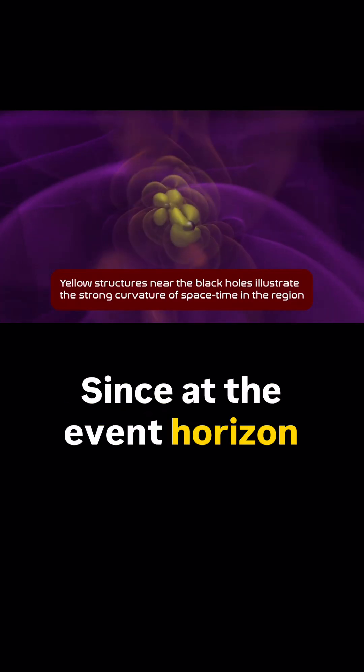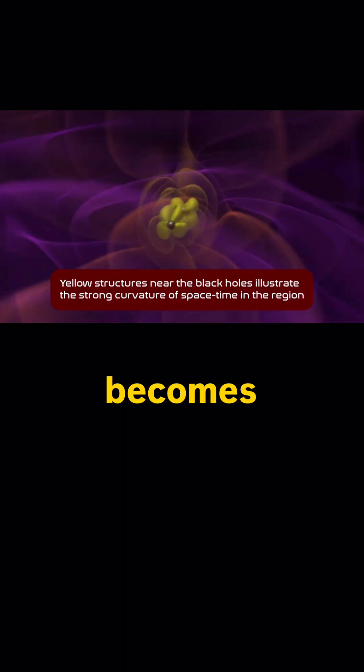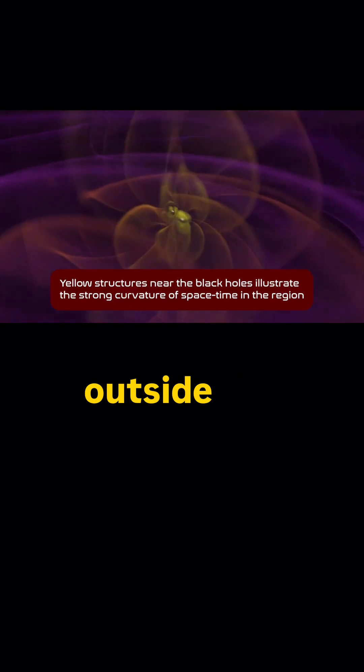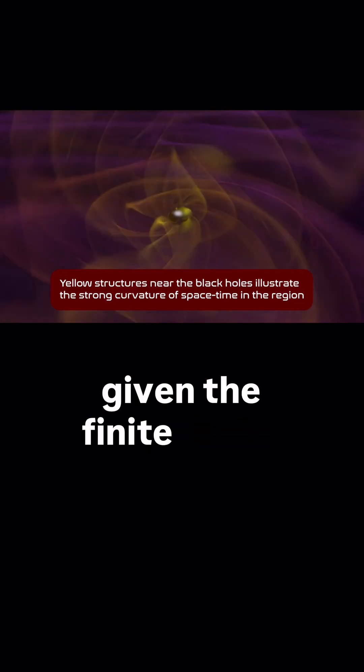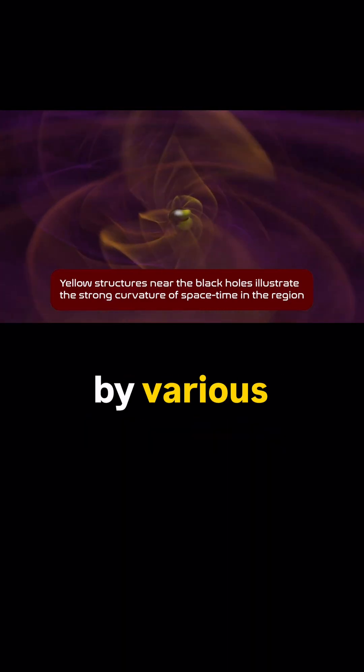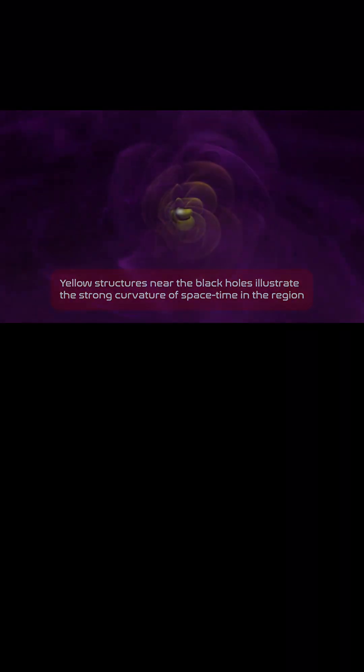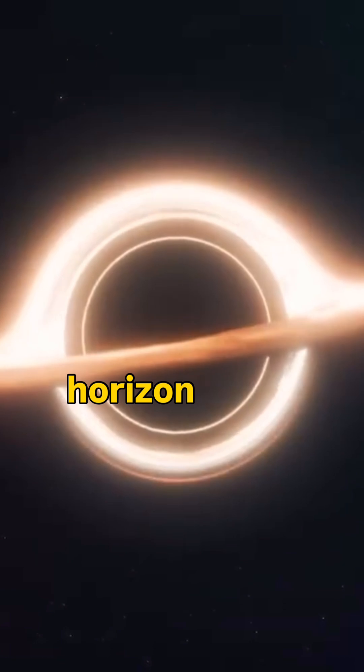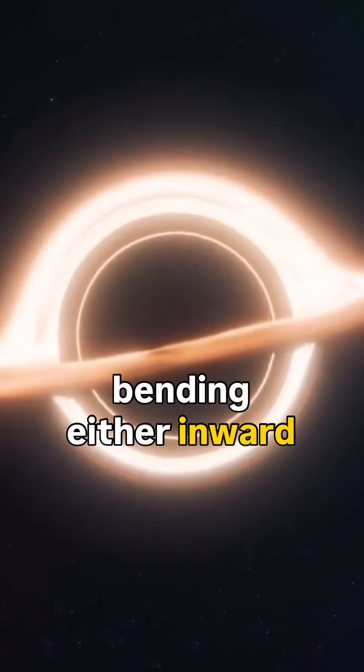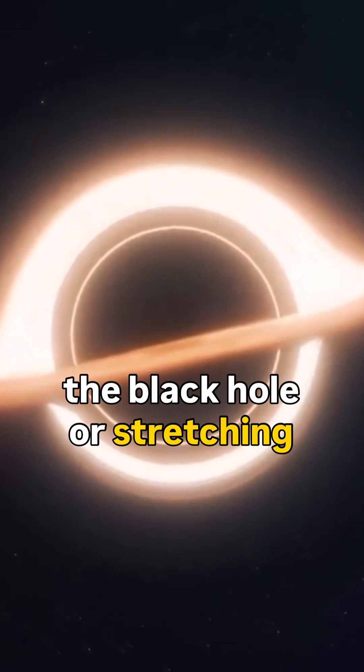Since at the event horizon the curvature of spacetime becomes enormous, outside the black hole, given the finiteness of the curvature of space produced by various bodies, it is impossible to obtain the same conditions as at the horizon. Therefore, the event horizon is not capable of bending either inward into the black hole or stretching outward.